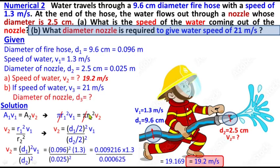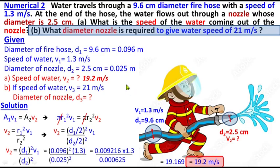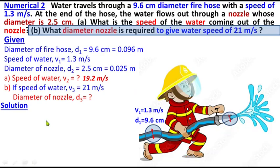So the diameter of nozzle D₃ is what we need to find, where V₃ is 21 meters per second. Using the continuity equation: A₁V₁ equals A₃V₃.